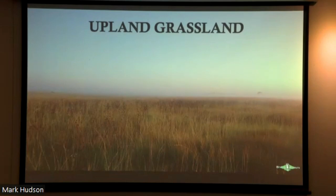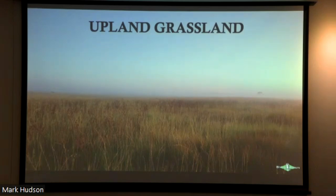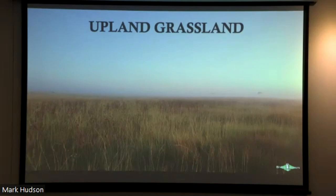The next zone we're going to look at in the Highveld is upland montane grassland. This arguably makes up the bulk of Highveld habitat, especially to the south and east of Johannesburg — very widespread. It's kind of just grassland, typically between knee-high and waist-high, up on this high altitude plateau. Not an awful lot that's distinct about it, but this habitat type houses the bulk of our endemic species in South Africa.